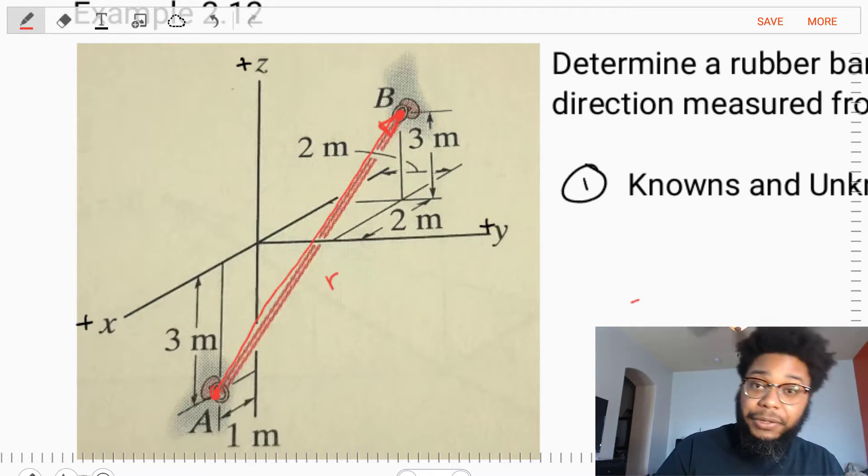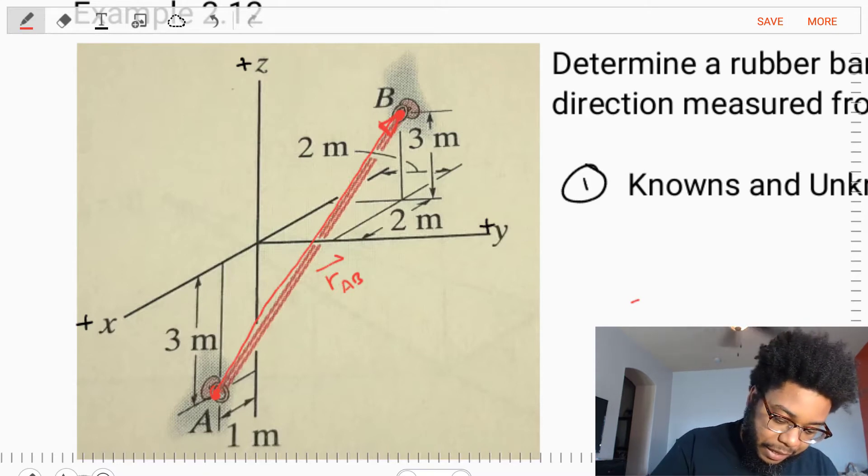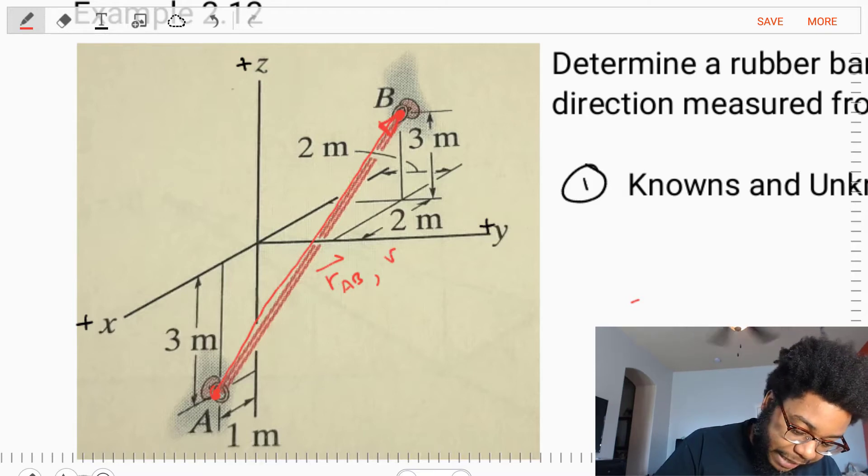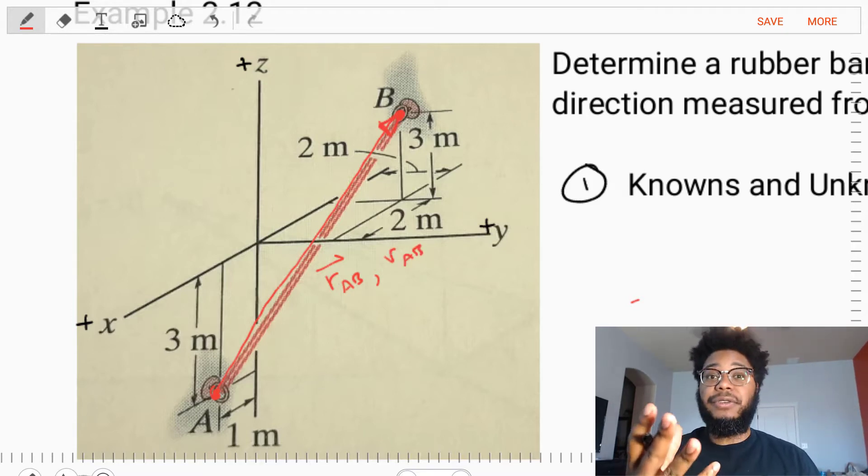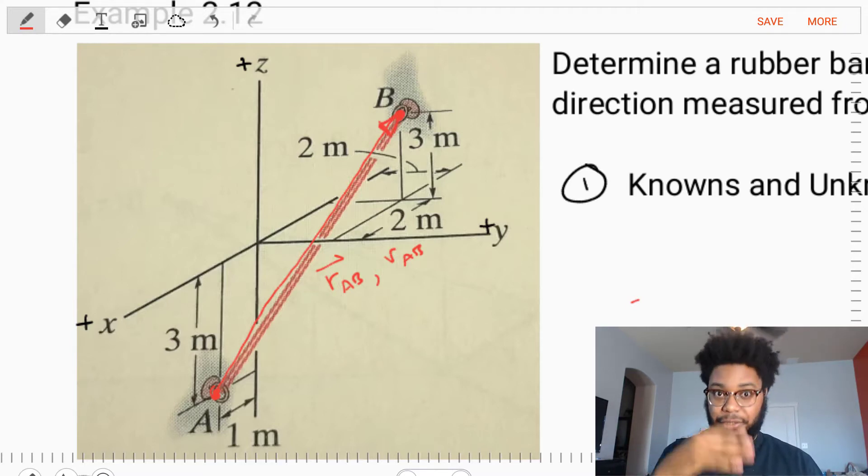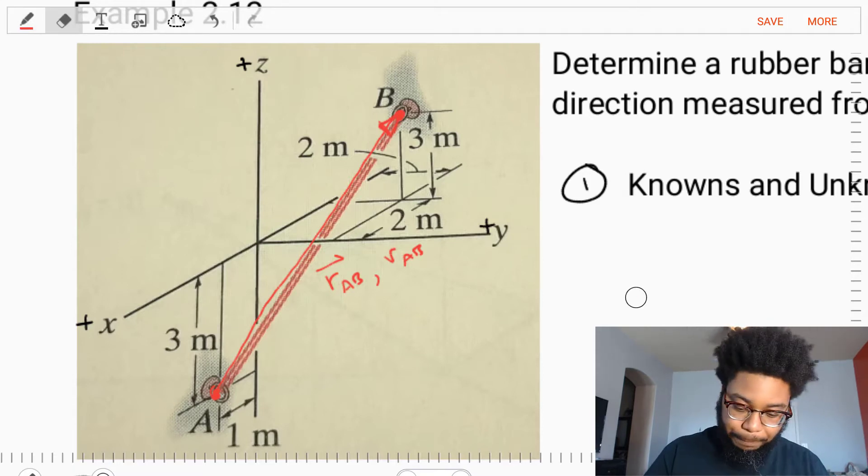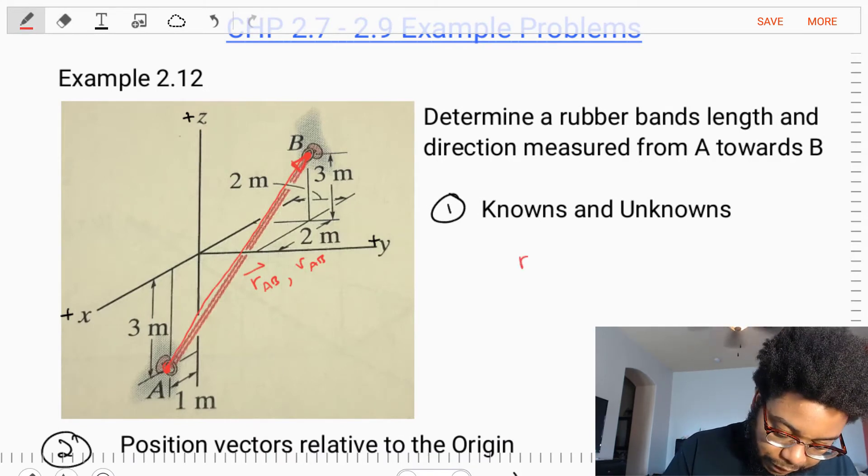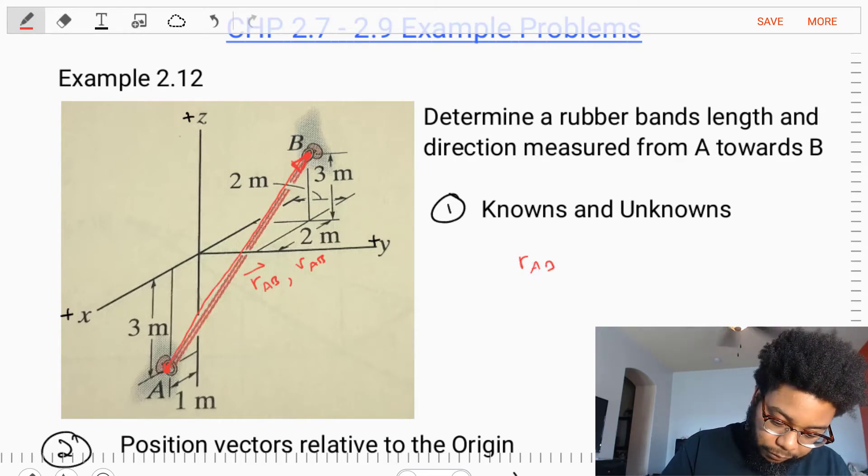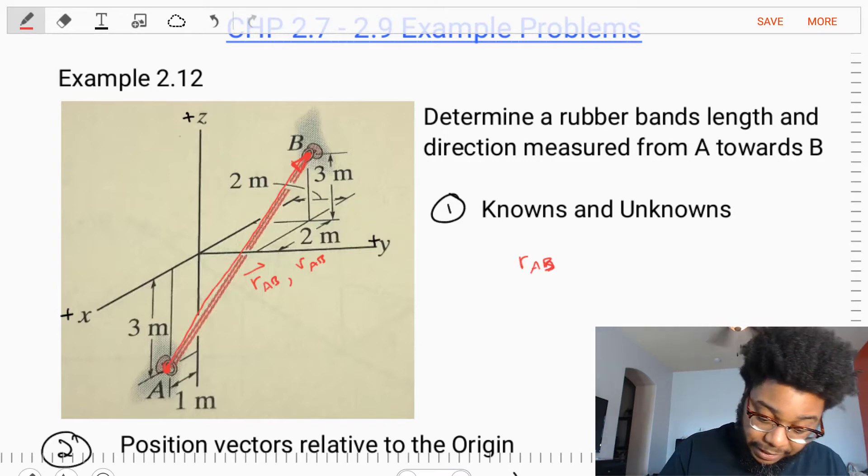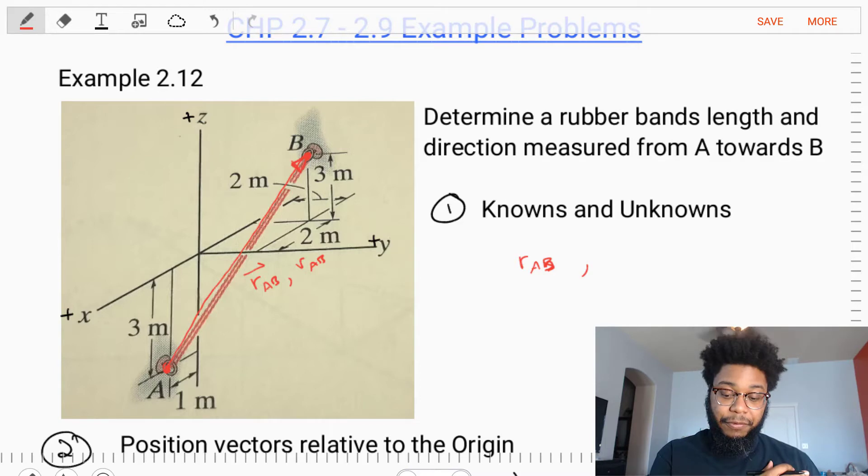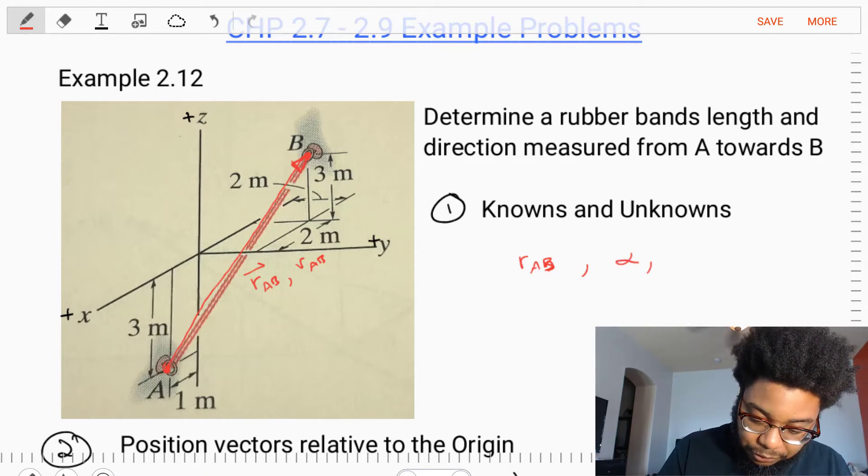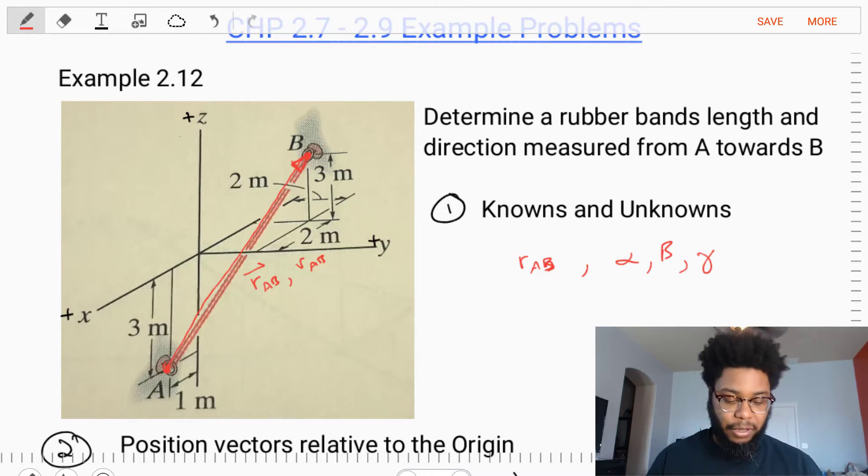We are asked to find the length from A to B of this rubber band. We could call this vector RAB, the position vector from A to B, and the length as the magnitude RAB, where the vector is indicated by an arrow and the magnitude is indicated by not having an arrow over the top. The unknown is the length RAB, as well as the direction measured from A towards B. We want to find the direction angles alpha, beta, and gamma.